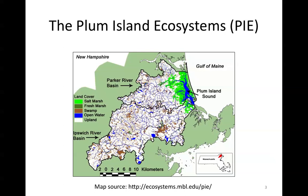To provide some context, the Plum Island ecosystems are located in Northeast Massachusetts. This is a good study area for land change modeling due to the fact that there has been a rapid rate of development within the last few decades. We will be using categorical land cover maps as well as several driver variables to model land change within the Plum Island ecosystems.